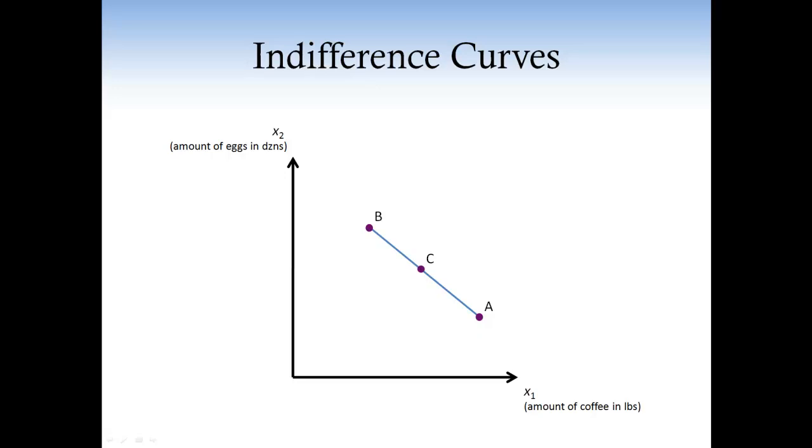So what does this assumption imply? That's a good question. Remember, when we introduced the assumption that for Mary more is better, we said that the indifference curve must be decreasing. Yeah, I remember that. Good. With this new assumption, we can say more. In fact, if Mary likes average better than the extremes, the indifference curve passing through the basket A cannot look like this or like this. Okay, so the indifference curves for Mary can only look like this. This is right.